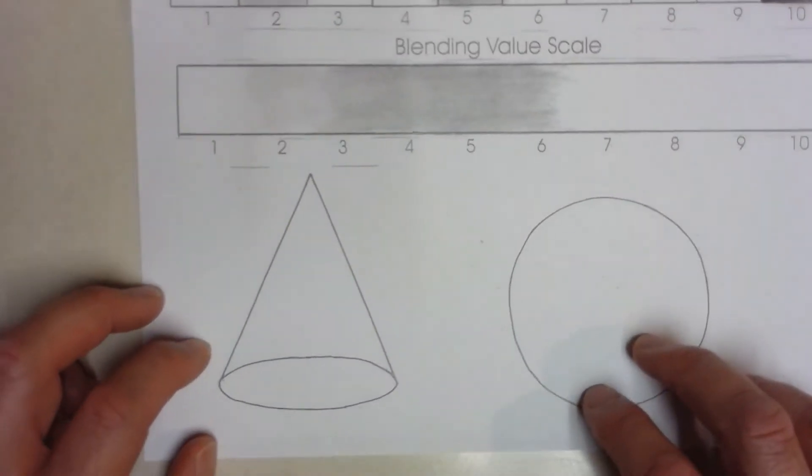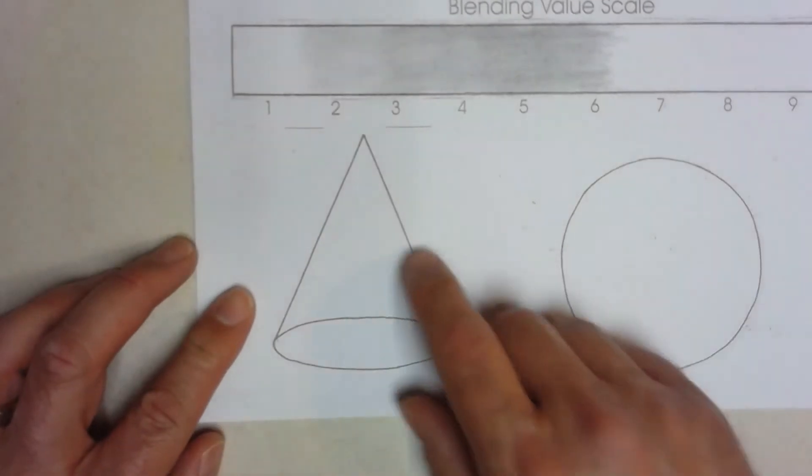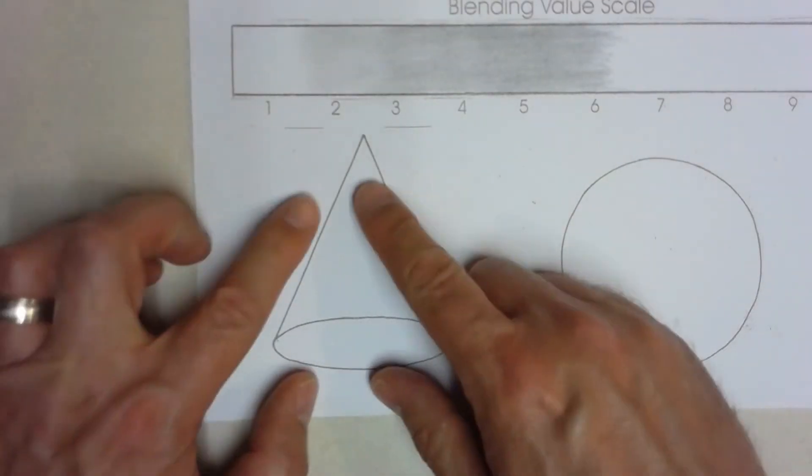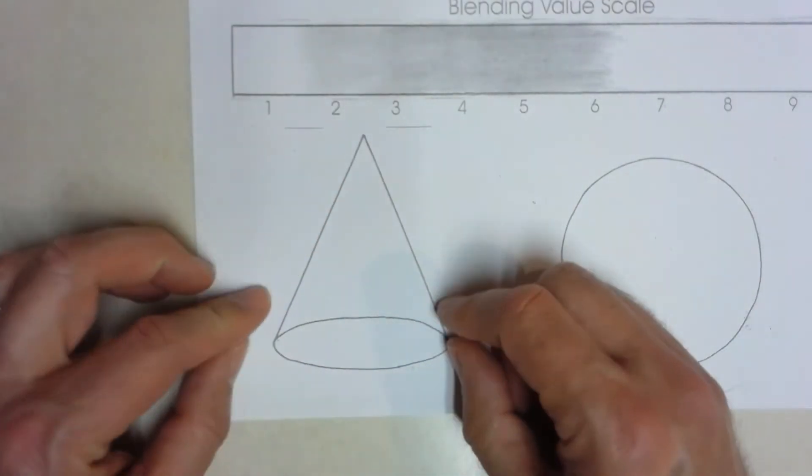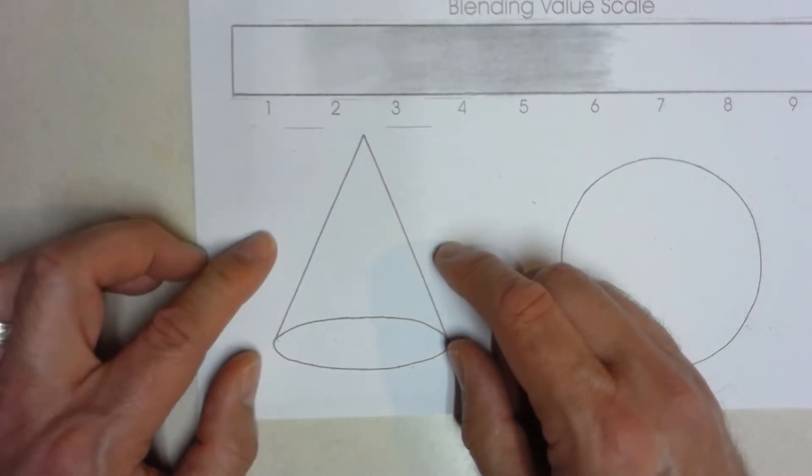Okay, now that we've talked a little bit about the scales, we're going to talk about what we're going to do with this cone. We're going to try to make this cone, this flat shape, look like a three-dimensional object.